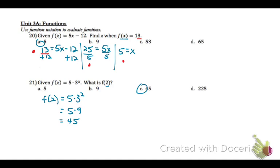On 21, we're given f(x) equals 5 times 3 raised to the x power. What is f(2)? So that means we're going to plug 2 into the function for x. So that will look like 5 times 3 raised to the second power. 3 to the second power is 9, so we get 5 times 9, which is 45, choice C.